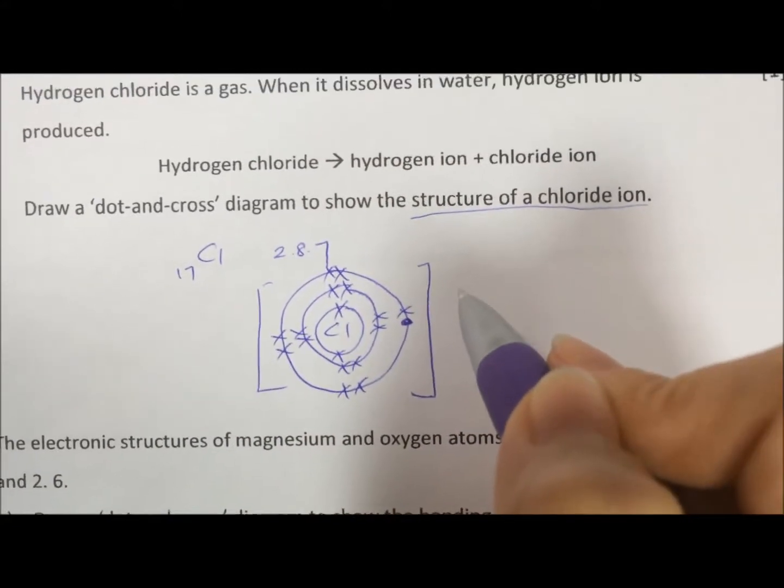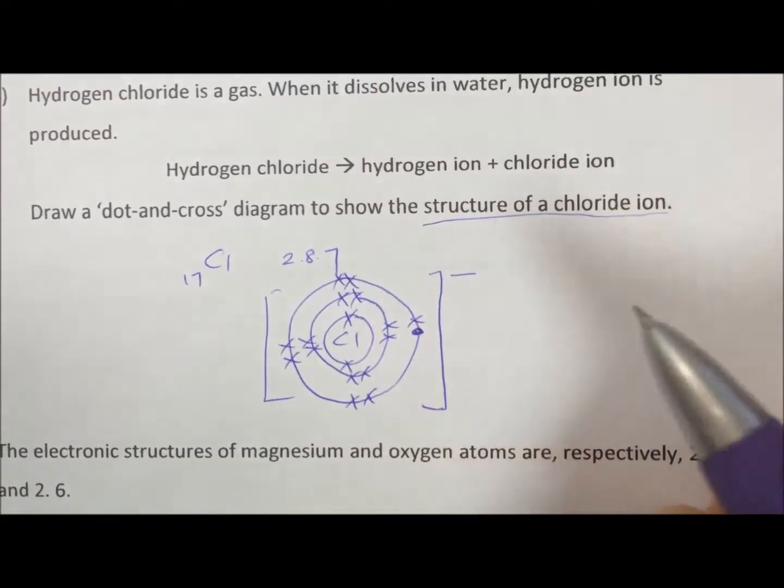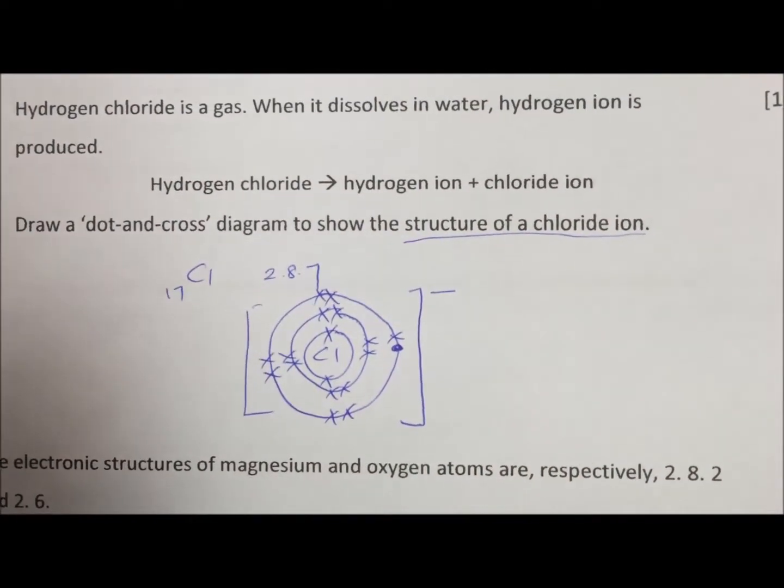So because we need to gain one electron to completely fill, you draw the gained one with a dot, bracket, and then you put a charge minus.